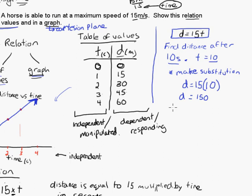D is equal to 150, and so basically, you could write a sentence after that. The horse went 150 meters after 10 seconds. That's an example of using the equation to solve something there.